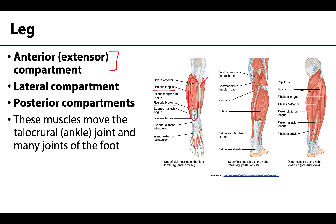The posterior compartment of the leg can be divided into two sub-compartments. The more superficial region is made of muscles most people associate with their calf muscles, and these attach on the calcaneal or Achilles tendon. The deeper muscles don't tend to be quite as large but still have long bellies and tendons. The muscles in the leg primarily affect action at the talocrural or ankle joint, but many of those long tendons extend past the tarsal bones to the phalanges, affecting many different joints of the foot.